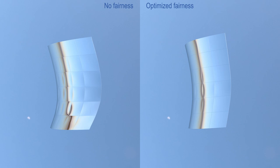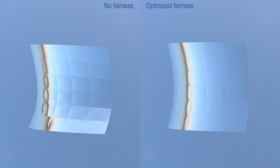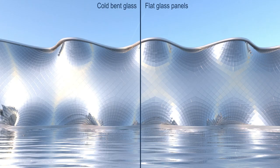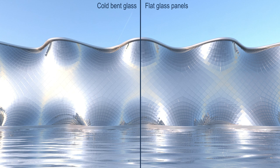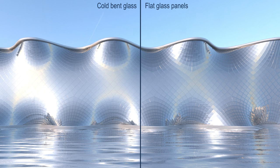Our fairness optimization greatly increases visual smoothness of reflection patterns, which are key in glass facades. This is especially noticeable when comparing cold-bent glass panelization against flat panels commonly used in architecture.